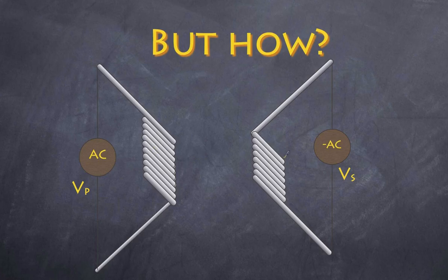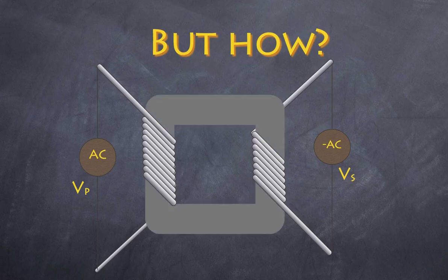By itself this setup is very inefficient, and there are a couple of things we need to add to the transformer. First, the number of turns in the primary coil and the number of turns in the secondary coil are different — that's really important for creating a step-up or step-down transformer. Additionally, an iron core is connected, and what this iron core does is concentrate the magnetic field lines, making the transformer much more efficient.